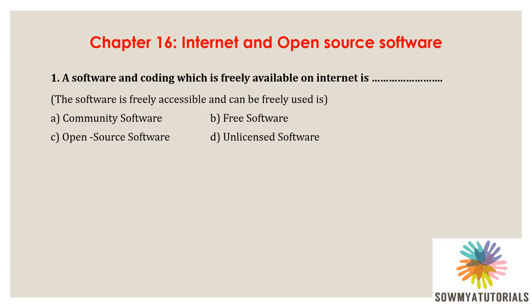Open Source Software can be freely used but does not have to be free of charge. Unlicensed Software is outside the scope of copyright protection — it is either public domain software or software which is non-distributed, non-licensed, and held as an intimate business trade secret. The correct option is B) Free Software, as it is software and coding which is freely available on the internet.